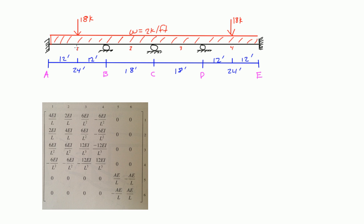Elements are usually put in boxes, so I'm going to put boxes around these elements. We also have joints, and joints are usually given in circles. So we have joint 1 here at A, 2 at B, 3 at C, 4 at D, and 5 at E. So we have four elements and five joints.